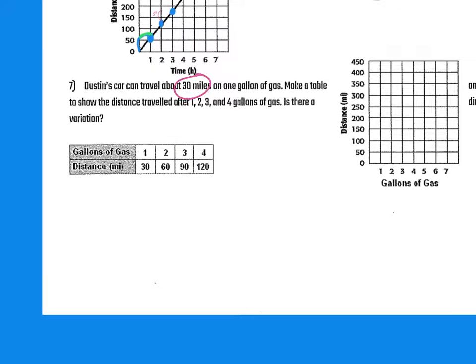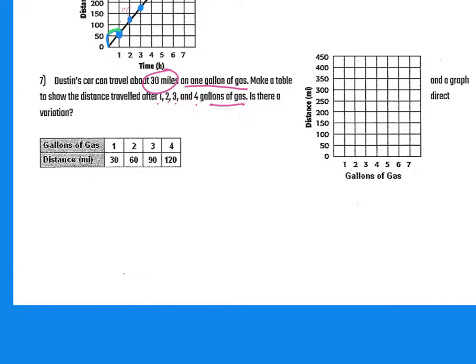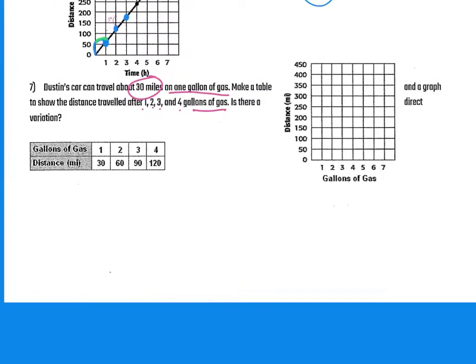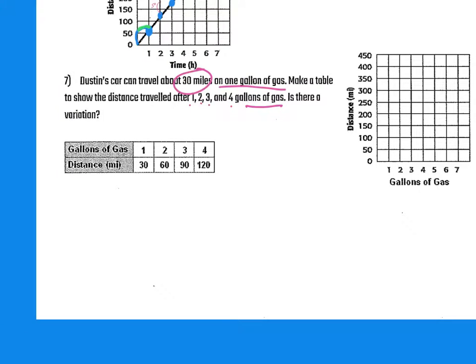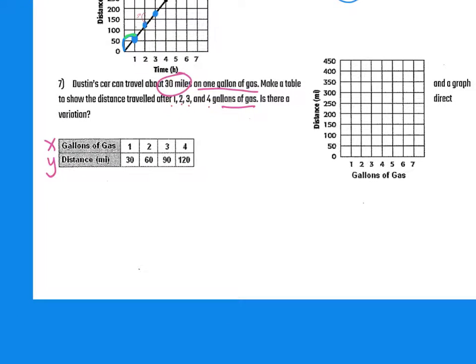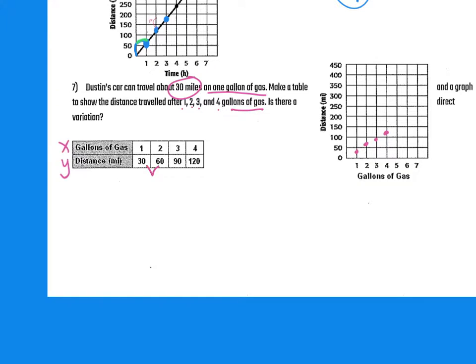Dustin's car can travel about 30 miles on one gallon of gas. Make a table to show the distance traveled after one, two, three, and four gallons of gas. Is there a variation? So the same thing, they already did our table for us. They didn't fill in the graph, so we can do that. Remember, that's your x value, that's our y value. So 1, 30. 30 over 1. 2 is 60. 3 would be 90 and 4, 120. So my change in y is 30. Goes up by 30 each time. And my change in x is just 1, plus 1, plus 1, plus 1. So it's 30, which is what they told you in the beginning. 30 miles in 1 gallon.